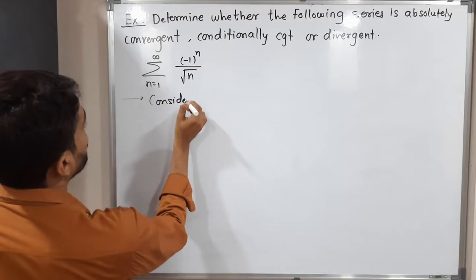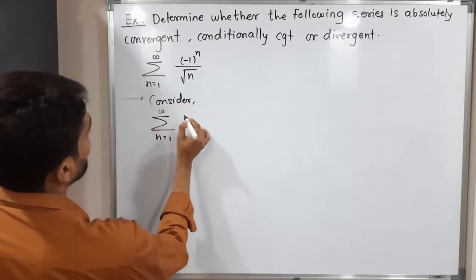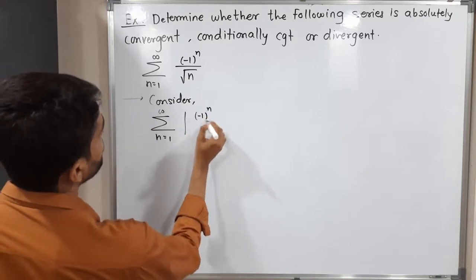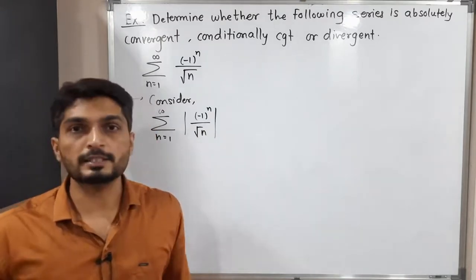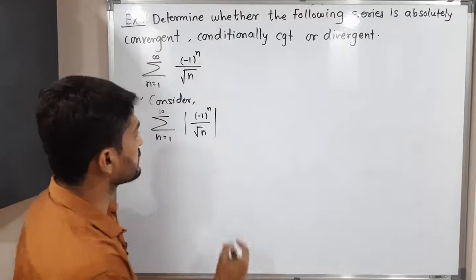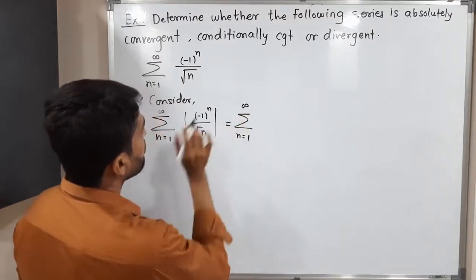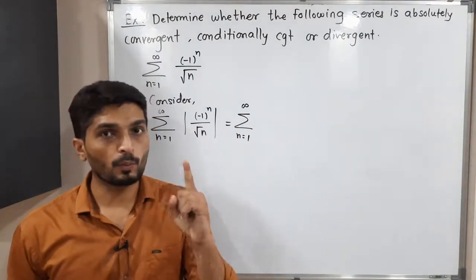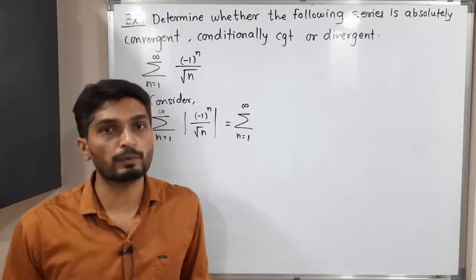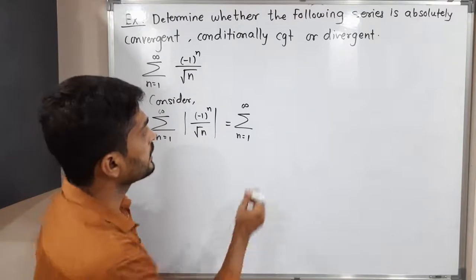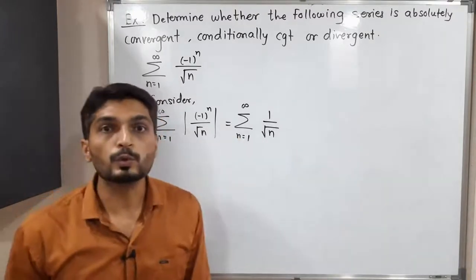I am going to apply modulus to the summation running from 1 to infinity of (-1)^n / √n. When you apply modulus, you can take separate modulus for numerator and denominator. The modulus of (-1)^n is 1, since (-1)^n will have either +1 or -1 value, but applying modulus removes the minus sign.